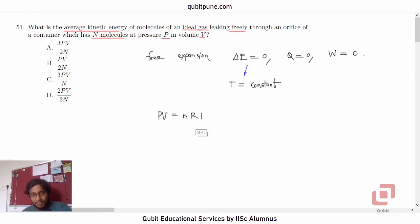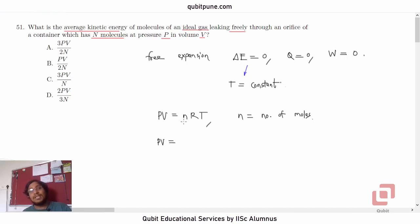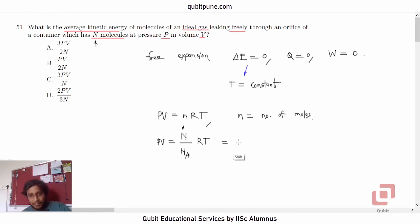Let's recall the ideal gas equation: pV = nRT, where n represents the number of moles of the ideal gas. The number of moles is the total number of molecules N divided by Avogadro's number, so pV = N·kB·T.